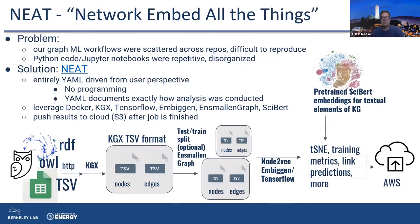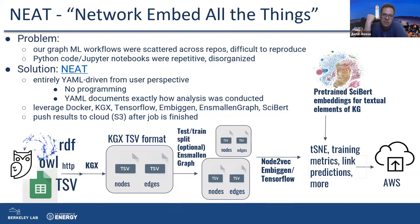This is just an example — shifting gears a bit — we made some software called NEAT that facilitates the sort of graph machine learning that you might want to do on knowledge graphs. The problem basically when we did the analysis I just described is that it becomes a bit of a mess pretty quickly — the workflows are scattered across a bunch of different repos, and then when you go to write the paper, it's difficult to reproduce exactly what you did.